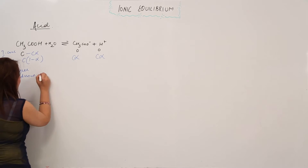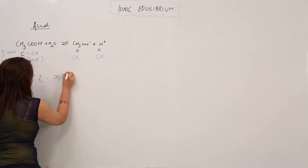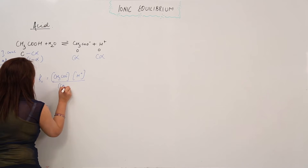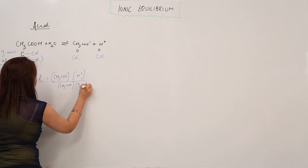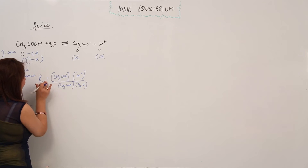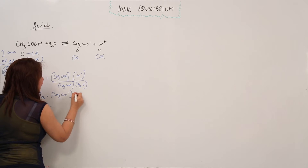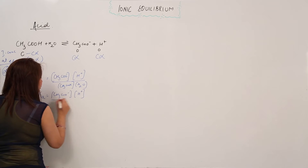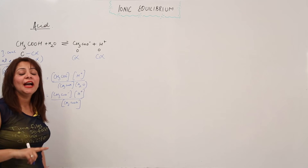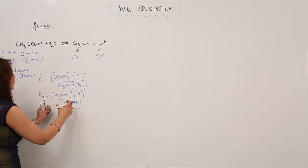Now I'm writing the equilibrium constant expression: K equals the concentration of acetate ion times hydrogen ion divided by acetic acid and water. Multiplying both sides by the H₂O factor, we get Ka — the ionization constant for the acid — which equals the concentration of acetate ion times hydrogen ion divided by the concentration of acetic acid.